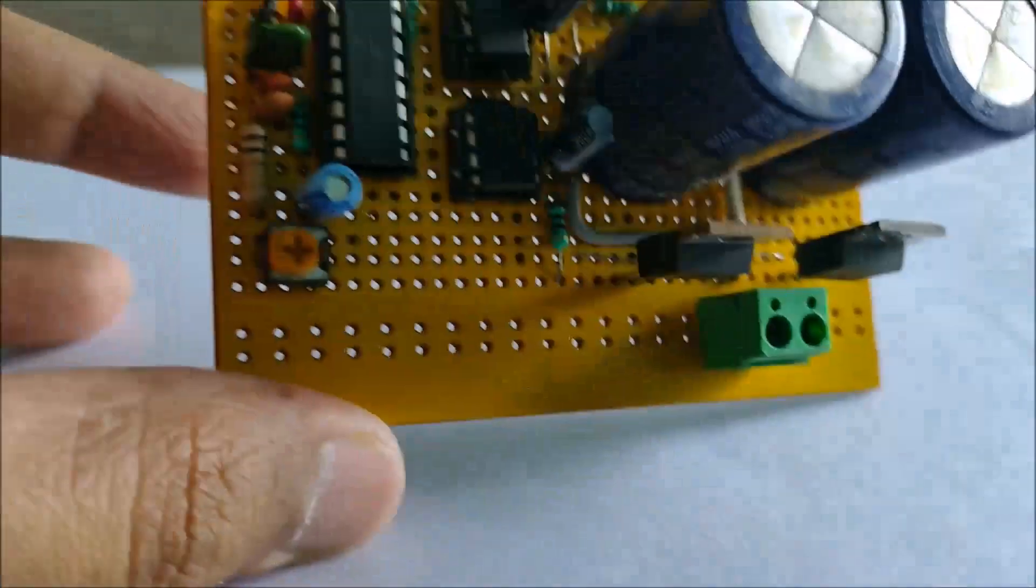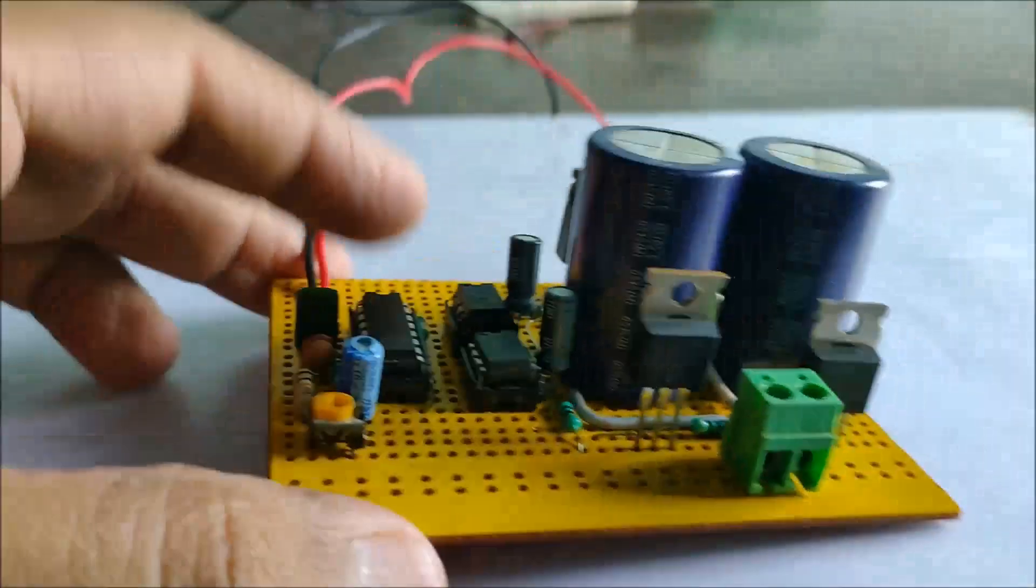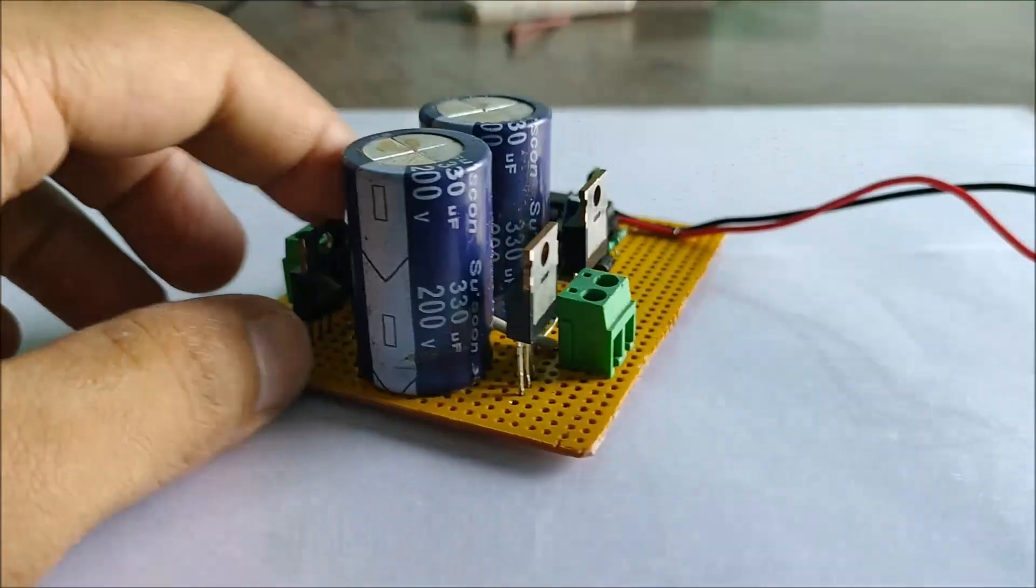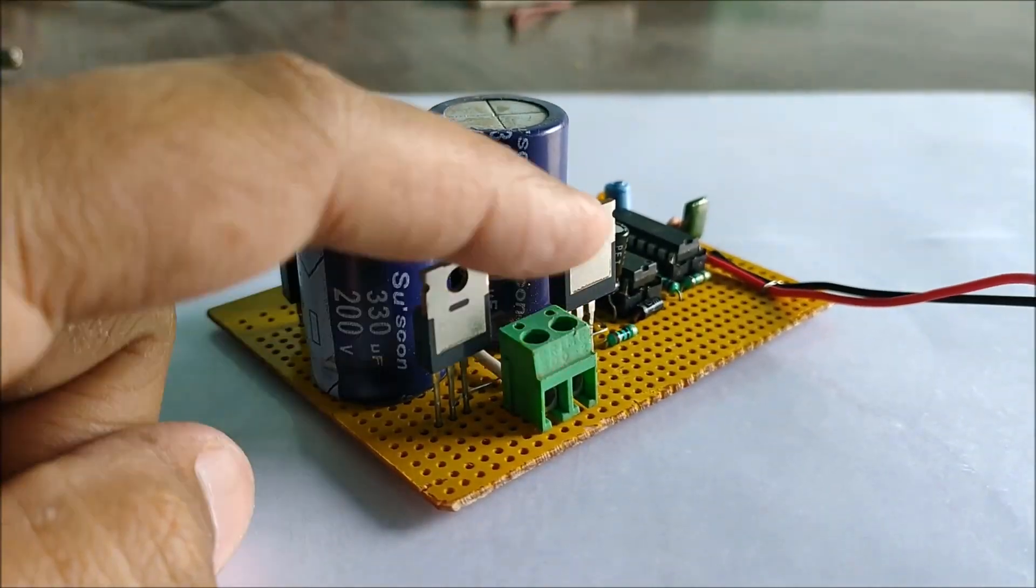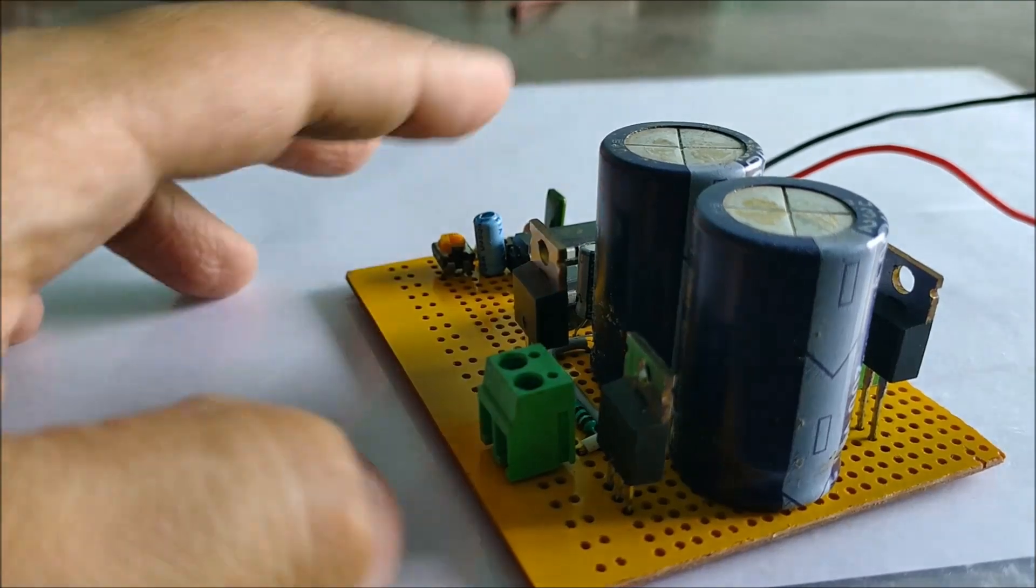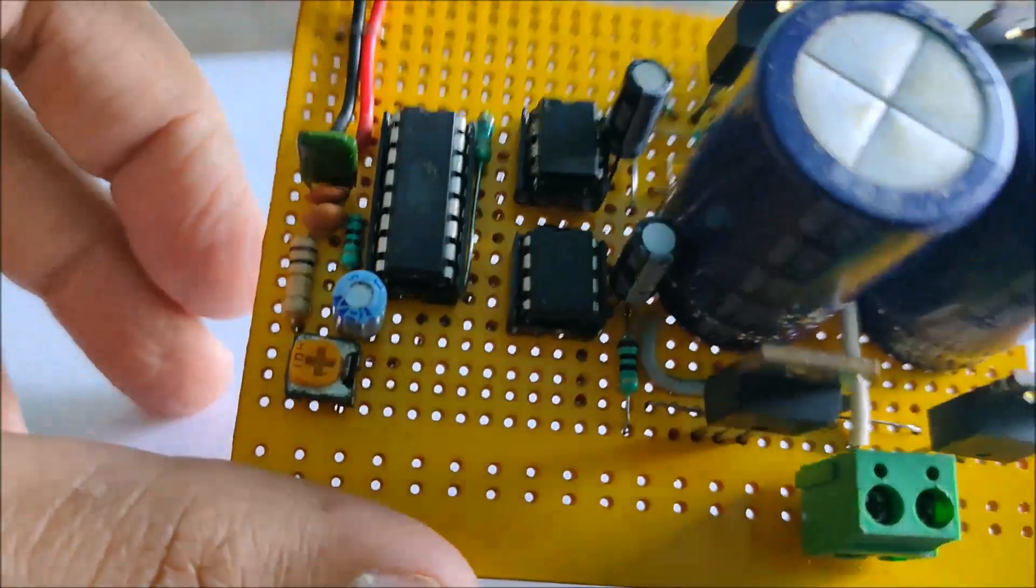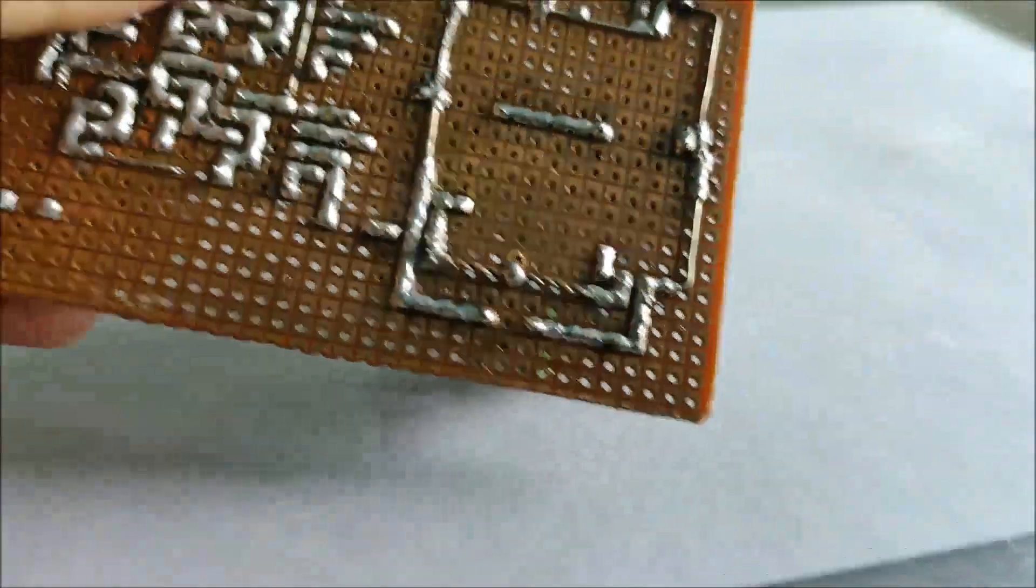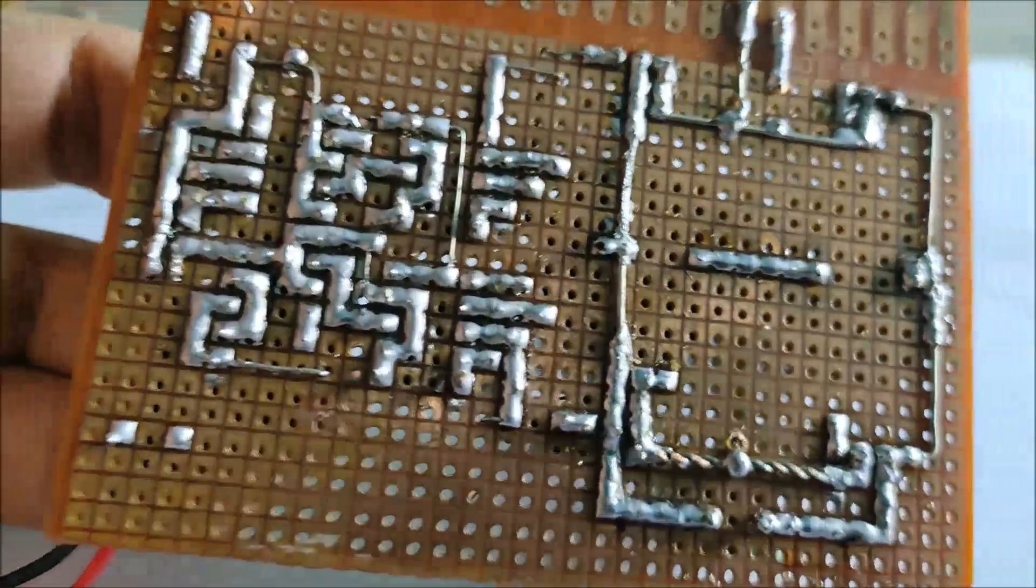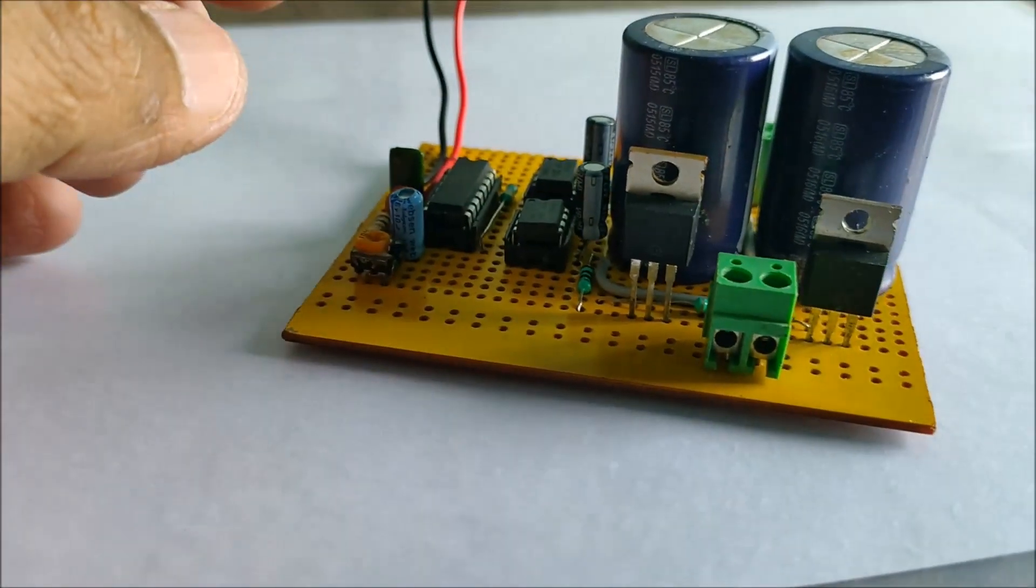With that being said, our soldering process is complete and this is what the entire module looks like. This screw terminal is for the input 240 volts DC signal and the following screw terminal is for the 240 volts AC output signal. The two wires are for the power supply for the oscillator and the MOSFET driver circuit. As you can see, the solder traces are small, neat and tidy, making sure that there are no shorts.